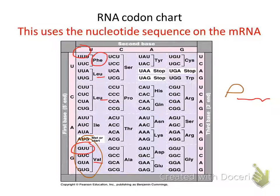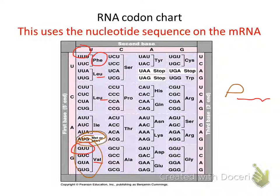61 of the 64 possible codons actually code for amino acids; the other three don't. AUG is always the start codon. The stop codons are UAA, UAG, and UGA. This codon chart is universal — for me, you, plants, mushrooms, bacteria, and all living organisms.